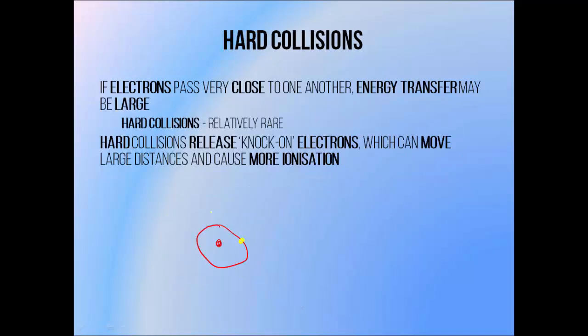If the high energy electron passes very close to an atomic electron, it transfers a great deal of energy to this electron, and sends it shooting off through the surrounding material where it causes additional ionization on its own. This is known as a knock-on electron. Because there is a lot of energy involved in this collision, it is known as a hard collision. These are relatively rare when compared with soft collisions.